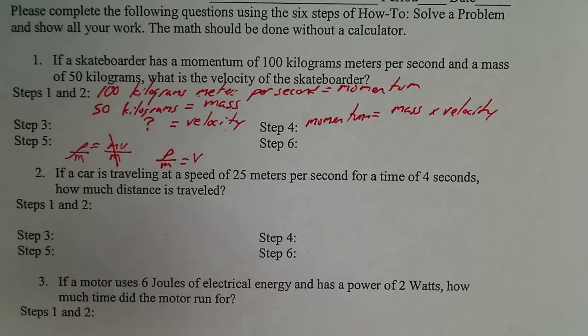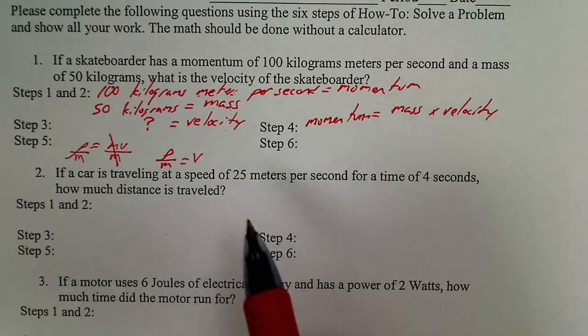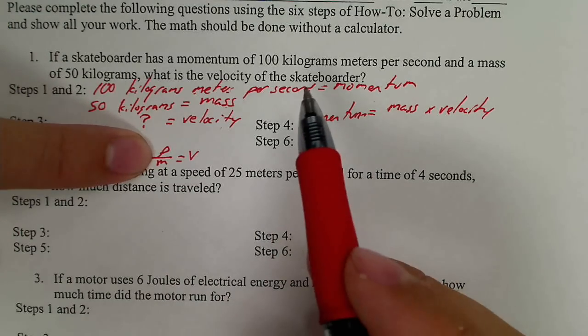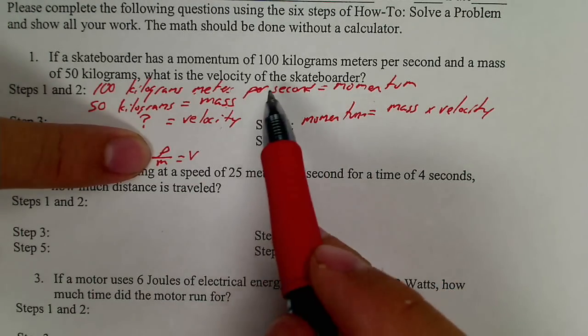At this point, if I've done step one, two, three, four, and five, step six is easy. I don't have to think about it. There's no thought required. I say, okay, how much is momentum? I don't have to go re-read the problem. I just look at what I've written. Oh, momentum equals 100.